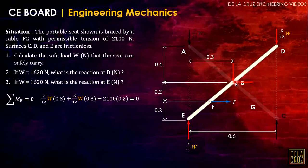Then this one will also cause clockwise rotation about point B. Plus 5 over 12 W times the moment arm, which is also 0.3, half of 0.6. Now this tension will cause clockwise rotation about point B, so minus 2100 times the moment arm 0.2.